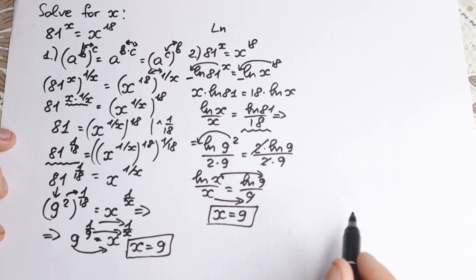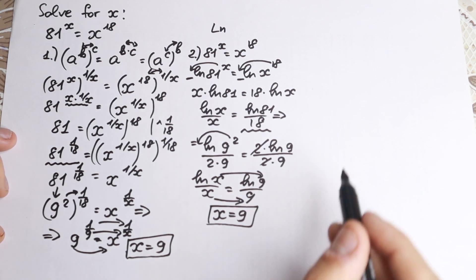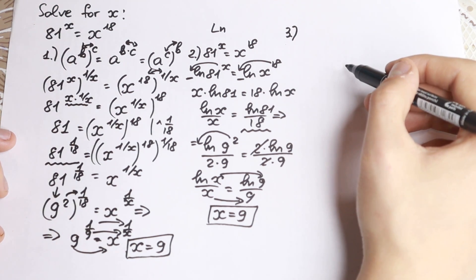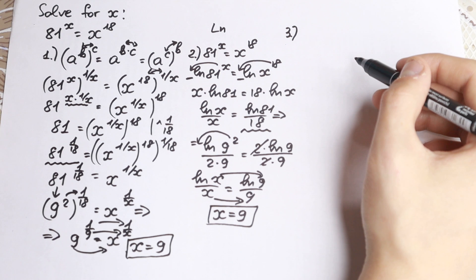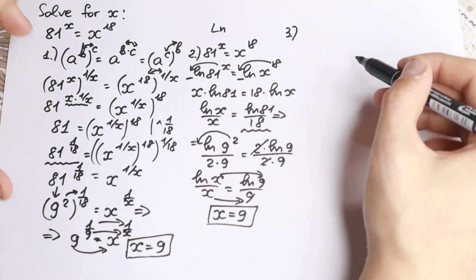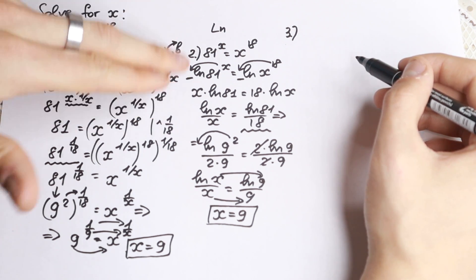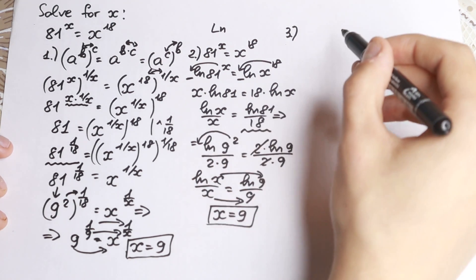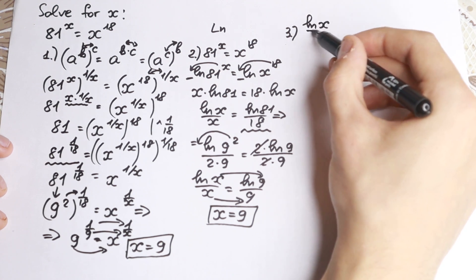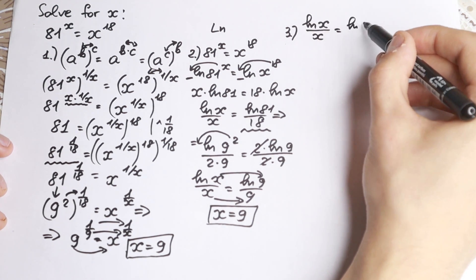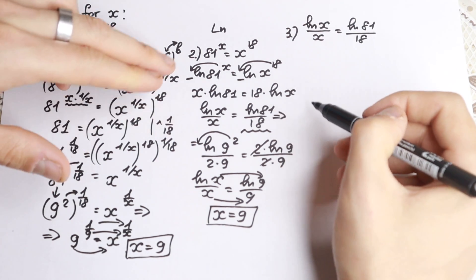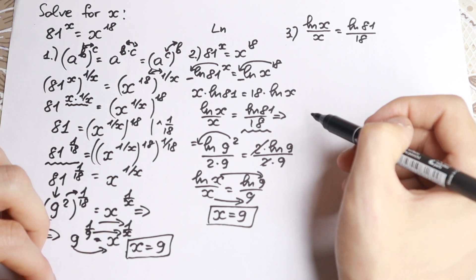That is the second method — I hope you enjoyed it. We also have a third method, really interesting and maybe the most difficult one, because we use the Lambert W function. For those who want to practice deep math theory, this covers natural log and Lambert W function. I want to continue from the expression natural log x over x equals natural log 81 over 18.